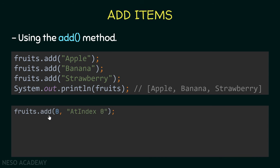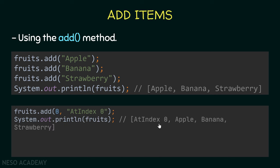If we want to add an element at a specific index, we use an overloaded version of the add() method that takes two arguments: the first specifies the index, and the second is the element. For example, adding a string at index zero makes it the first element, and all other elements are shifted automatically.